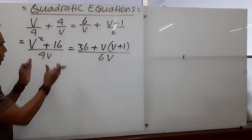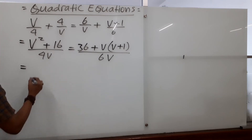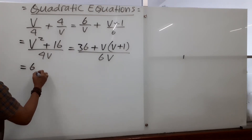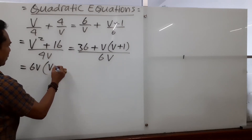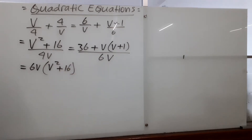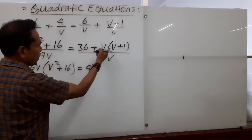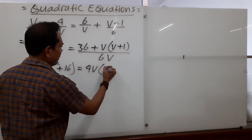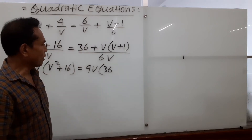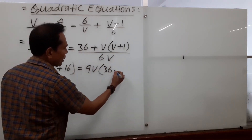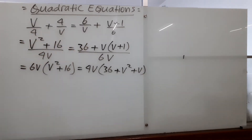Now in the next step, we swap the denominators. We put v squared plus 16 in the bracket on one side. Then we swap so that 4v goes to the other side with 36 plus v in the bracket. Now v times v gives us v squared, and then v times 1 gives us plus v. So we have done the expansion.